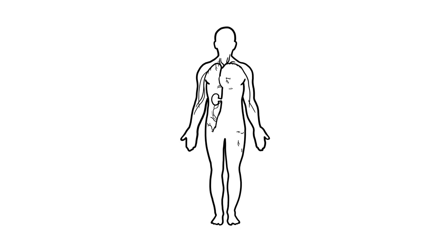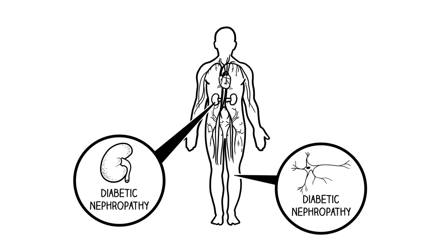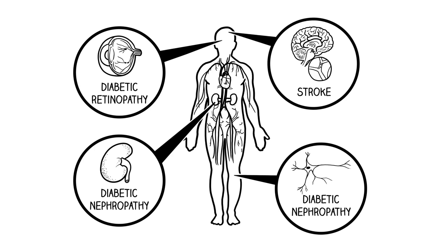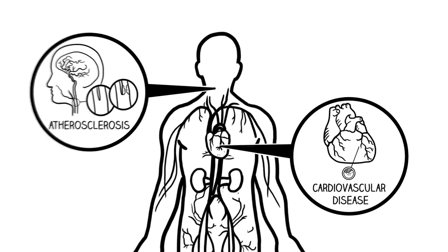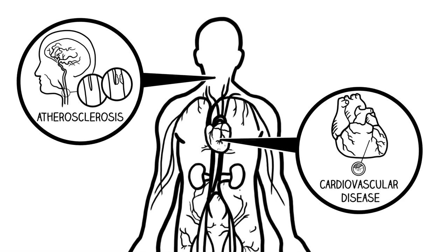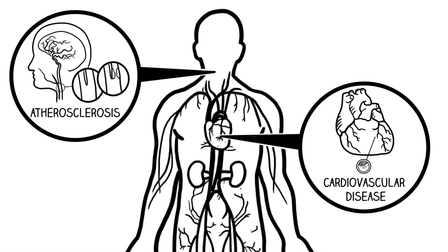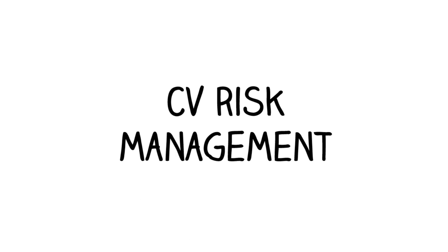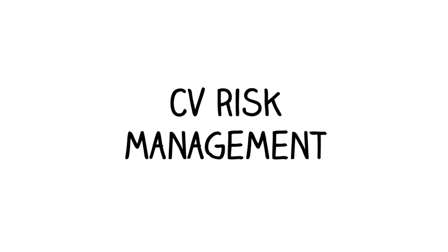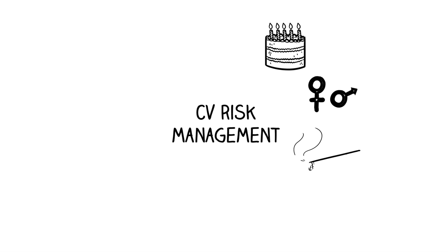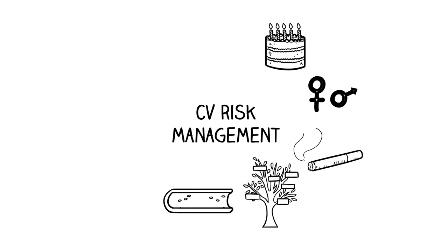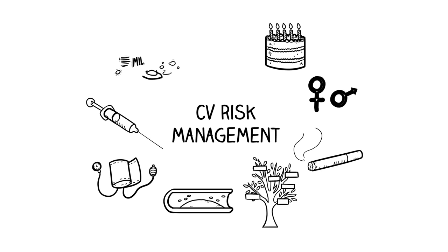Almost all diabetics develop vascular complications, and more than 70% of type 2 diabetes patients die of cardiovascular causes, so it's critical to have the most thorough and accurate picture of their cardiovascular risk. Currently, CV risk management is mainly based on a review of traditional risk factors such as age, gender, smoking, family history, lipid profile, blood pressure, and HbA1c.